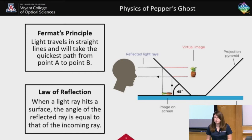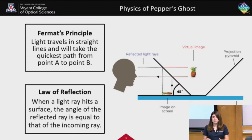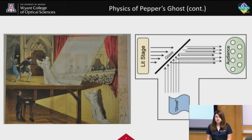It just looks like a regular image to us. Similarly, when we look straight in through the pyramid, we see that virtual image, which is the pineapple, and we kind of see it floating in the pyramid because our brain perceives that to be actually there.